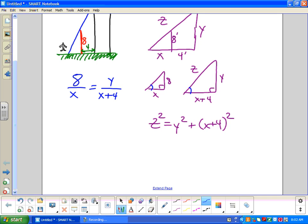Cross multiply. Algebra time. So divide by x, right? I think y equals 8 plus 32 over x.